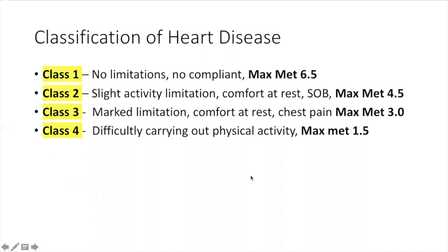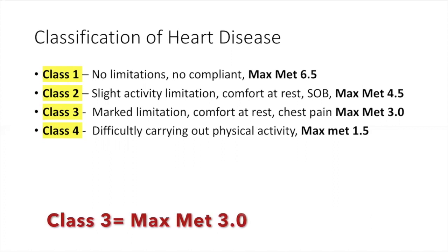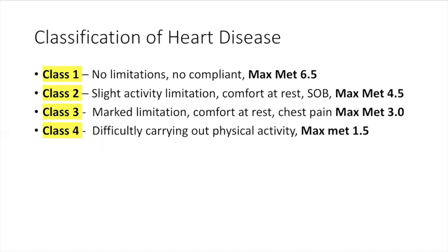What are the classifications of heart disease? Class one — no limitations. Think about Homer Simpson: he has no limitations at this time with any activities, so he can do max MET 6.5. Class two — slight activity limitation; he has some comfort at rest, max MET 4.5. Class three — marked limitation, comfort at rest, there might be some chest pain, max MET 3.0. Class four — difficulty carrying out physical activity; the patient is unable to do something due to discomfort, max MET 1.5.